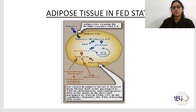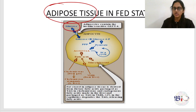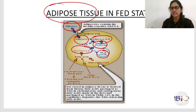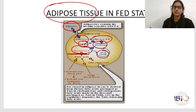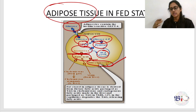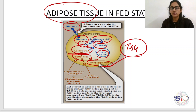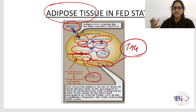Next is adipose tissue in the fed state. Glucose enters the adipocyte, converts to glucose-6-phosphate, then pyruvate, then acetyl-CoA, which enters the TCA cycle — this is glycolysis followed by the TCA cycle. Glucose-6-phosphate can also enter the pentose phosphate pathway. Excess acetyl-CoA forms fatty acids, and fatty acids with glycerol form triacylglycerol, which is stored in adipose tissue. So excess dietary carbohydrate is stored as triacylglycerol in adipose tissue.